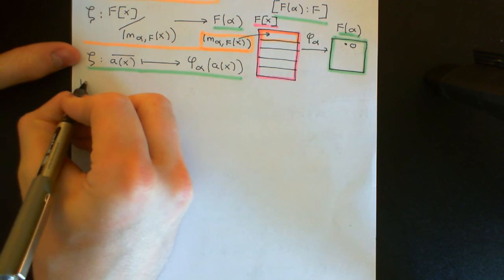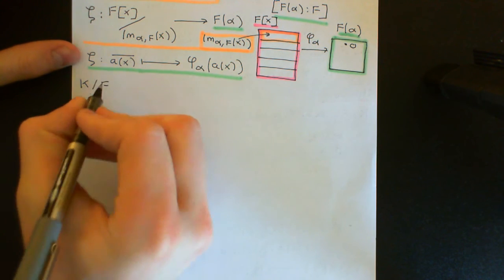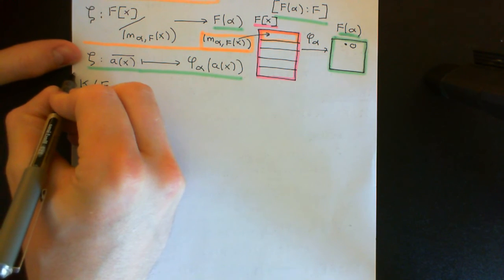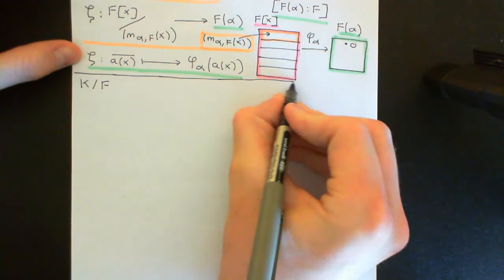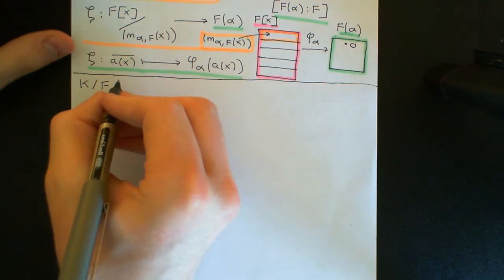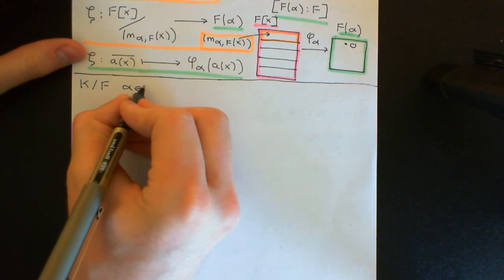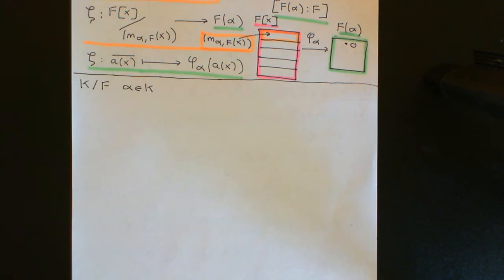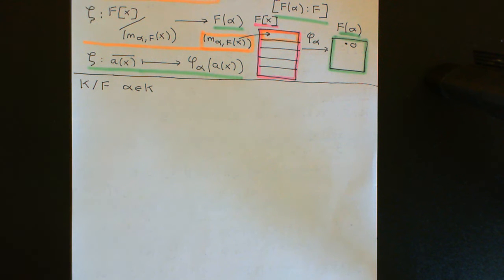So let k be a field extension over F, as always. The theorem says that alpha is going to be algebraic over the smaller field capital F if and only if the degree of the field generated by alpha over F is finite, i.e. if the field generated by alpha over F is a finite field extension of the field capital F.